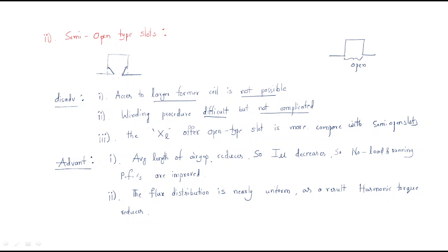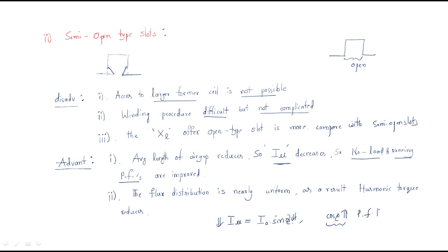First advantage: the average length of the air gap is reduced compared with the open type slot where air gap length is high. The overall average air gap length is decreased, so the magnetizing current value decreases. Magnetizing current is I-naught sine-phi; when this value decreases, sine-phi decreases, cos-phi increases, and the power factor improves. So no-load and running power factors are improved.